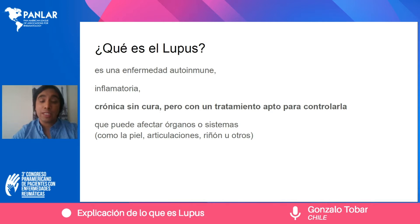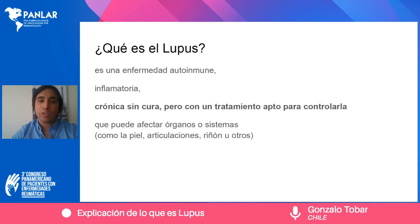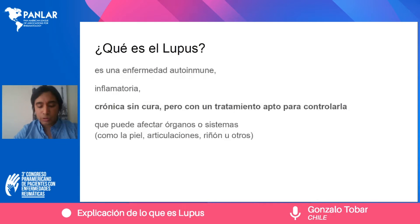Es una enfermedad crónica sin cura, pero que hoy día tiene un tratamiento totalmente apto para poder controlar la enfermedad y tener una buena calidad de vida. Es una enfermedad que puede afectar órganos o sistemas, tales como la piel, las articulaciones, el riñón, el pulmón, el corazón y otros más.